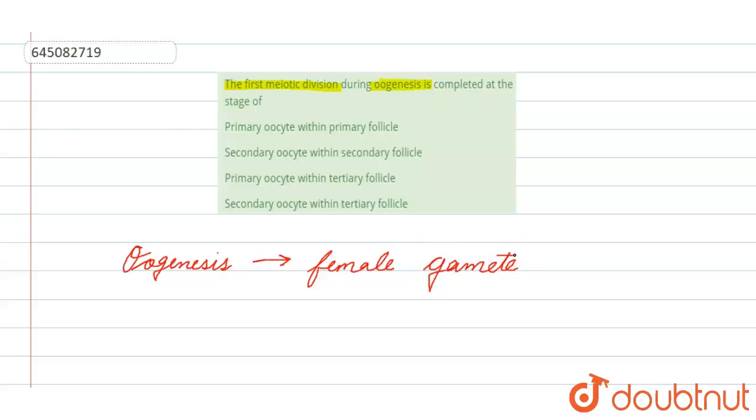Now in oogenesis, the first meiotic division will take place when the primary oocyte is converted into secondary oocyte.